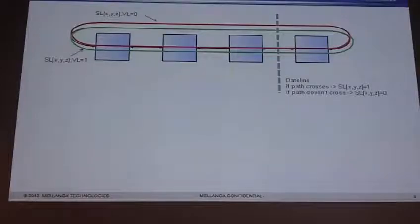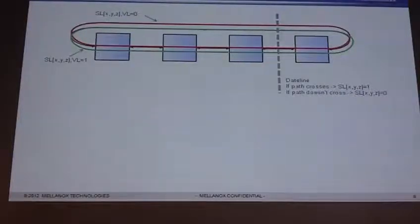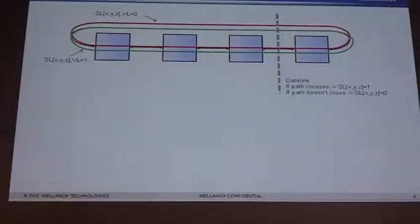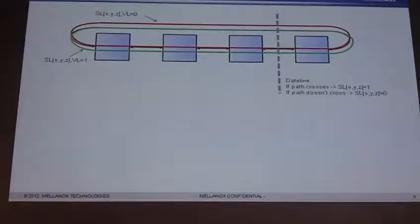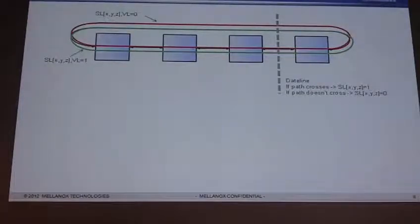In InfiniBand, I have something called virtual lanes, and each of these virtual lanes has its own dedicated set of buffers. So as I go through the network, virtual lane zero has its own set of buffers, virtual lane one has its own set of buffers, VL2 has its own, and so on. What I do is: if I cross the dateline, I use VL zero; if I don't cross the dateline, I use VL one. This means there's only one particular set of buffers that cross the dateline, which breaks my loop.